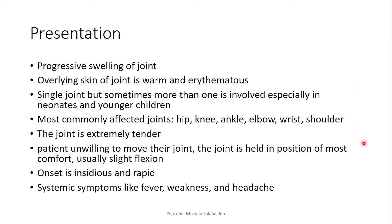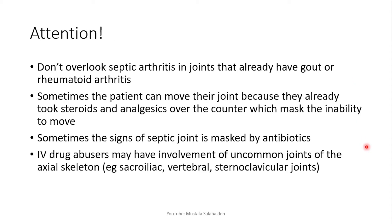Do not overlook septic arthritis in joints that already have gout or rheumatoid arthritis, because septic arthritis is possible in every joint and is actually more likely to occur in those joints. Also, a patient may still be able to move their joint if they have already taken steroids or analgesics, which masks the inability to move — so take a thorough history. The signs of a septic joint can also be masked by antibiotics.